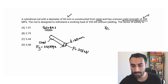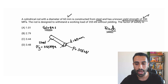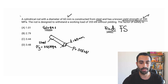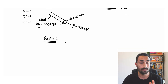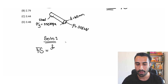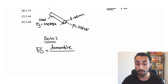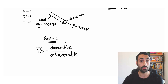What we want to find is the factor of safety, which we'll call Fs. The basic definition is: factor of safety equals the favorable divided by the unfavorable. Have this on your equation sheet.